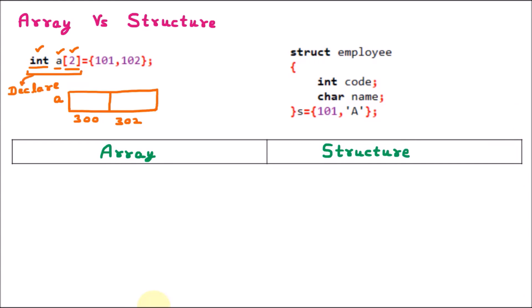After declaring the array, we provide the values. The first value we provide is 101, so 101 is stored, and the second value is 102, so that is also stored. This second part is called the initialization.